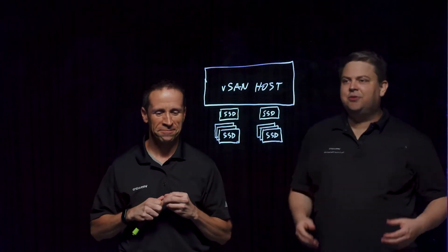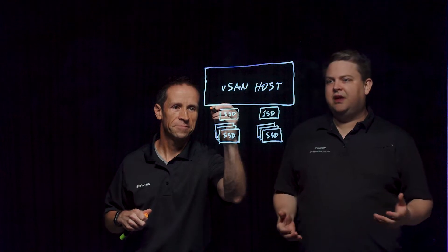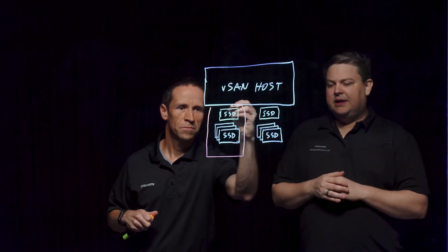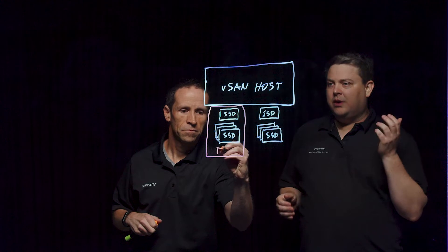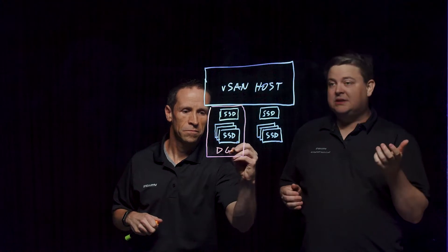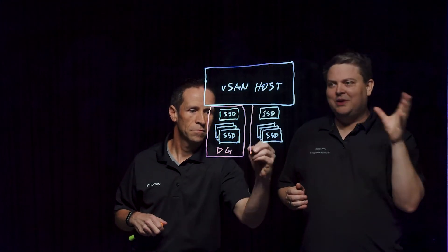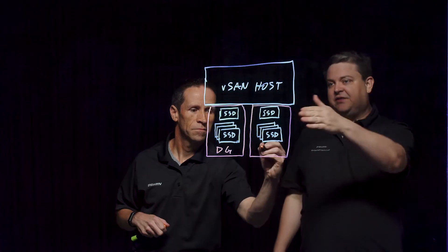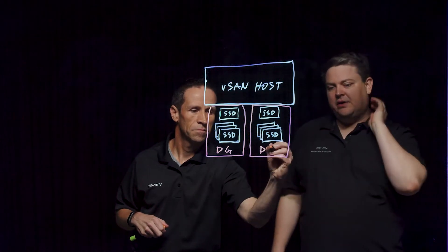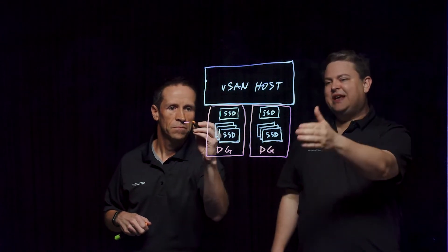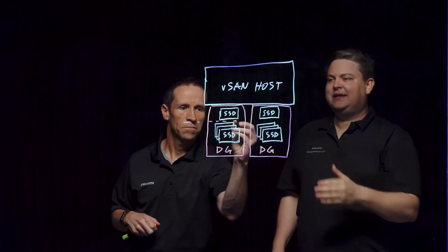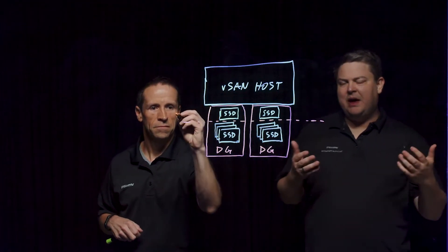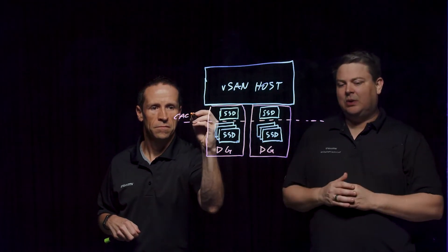A disk group is a unit of resources within the VMware vSAN data store. This can consist of at a bare minimum two devices, although we tend to recommend more. It's going to have at least one caching device that you see here on the top, and then one to seven capacity devices. The sum of those capacity devices is our raw capacity of our data store.